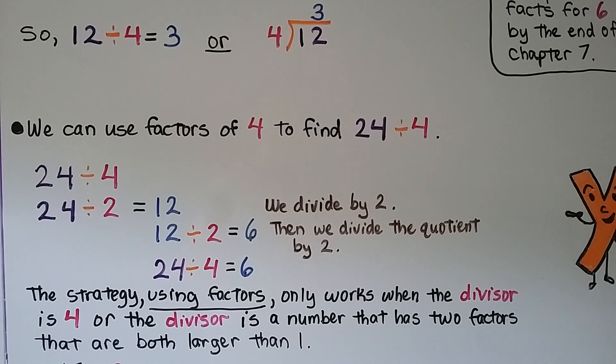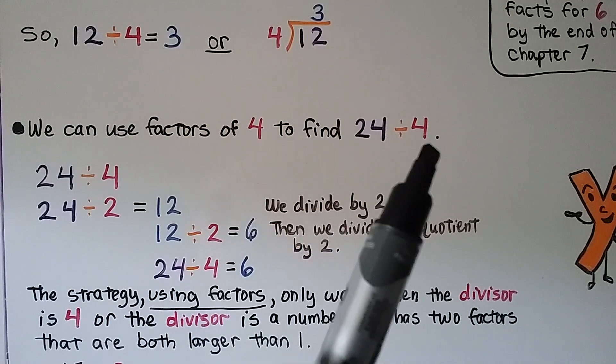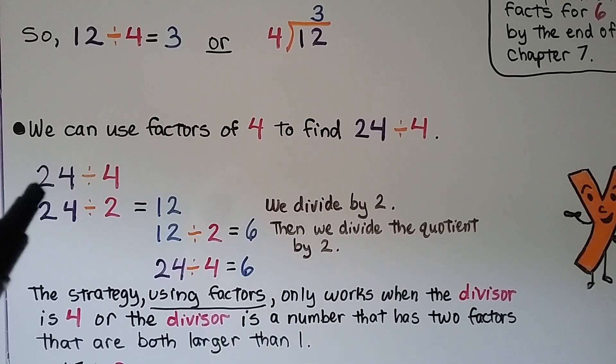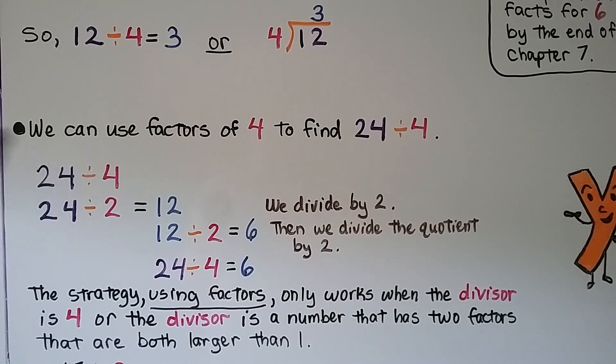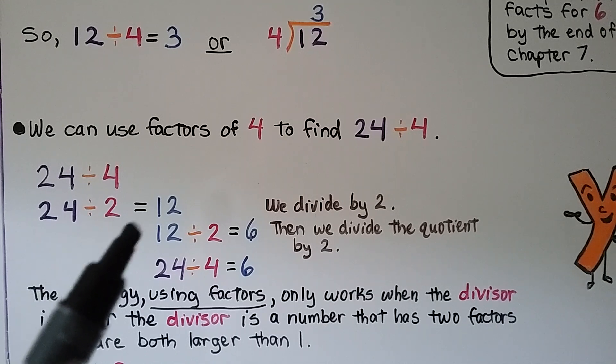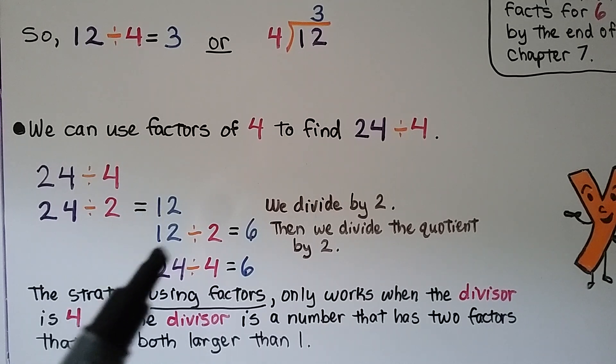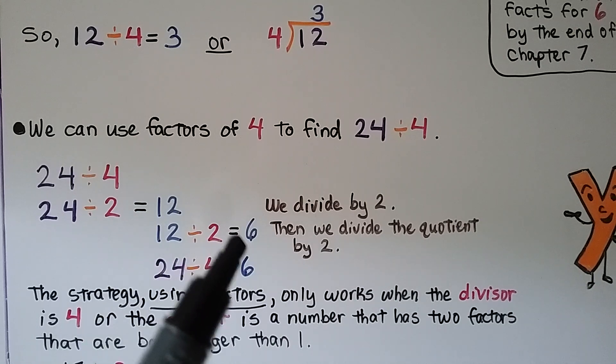Here's another example of using the factors. We can use factors of 4 to find 24 divided by 4. The 4 can be broken into 2 and 2. We divide by 2: 24 divided by 2. That's equal to 12. Then we divide the quotient by 2: 12 divided by 2 is equal to 6.